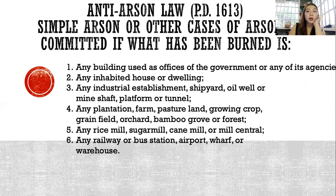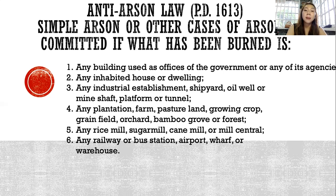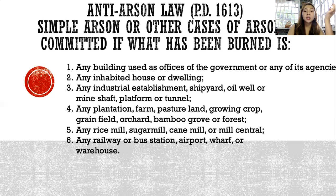Under the Anti-Arson Law or PD 1613, simple arson is committed when what has been burned is: any building used as offices of the government or any of its agencies; any inhabited house or dwelling; any industrial establishment, shipyard, oil well, mine shaft, platform, or tunnel; any plantation, farm, pastureland, growing crop, grain field, orchard, bamboo grove, or forest; any rice mill, sugar mill, cane mill, or mill central; any railway or bus station, airport, wharf, or warehouse. The penalty for destructive arson is reclusion perpetua to death. The penalty for simple arson is reclusion temporal to reclusion perpetua. Under Section 5 of PD 1613, if by reason of simple arson death results, the penalty is reclusion perpetua to death.